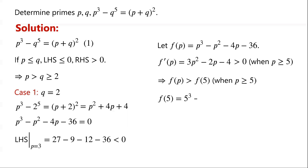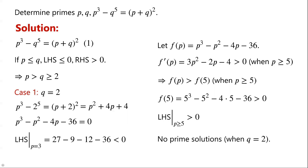f of 5 equals 5 cubed minus 5 squared minus 4 times 5 minus 36, which is greater than 0. So when p is greater than or equal to 5, the left-hand side of this equation is always greater than 0. Therefore, this equation has no prime solutions when q equals 2.